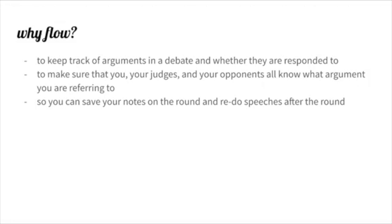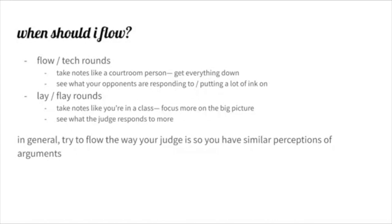This is a bit of an unpopular opinion, but I'm the one who made this lecture, so I will share it. You should flow differently depending on the round you're in. In general, you should try and flow the way that your judge is, because you want to have a similar perception of the arguments as your judge does. So in flow or tech rounds, you're going to be taking notes like a court transcriber — you want to get everything down. You also want to be able to see what your opponents are responding to, what they're putting a lot of ink on, what they're probably going to go for, because your judge is probably getting the vast majority of this down too. So if they catch something you don't, that's an easy way for them to vote for your opponents.